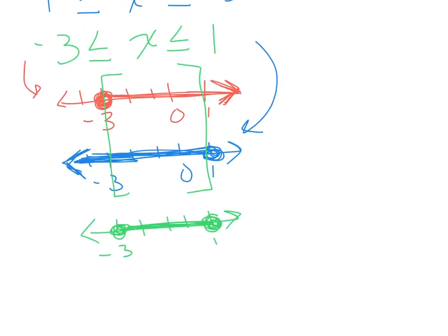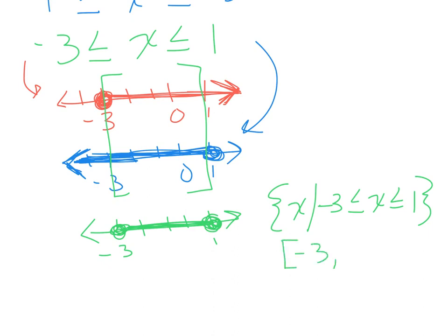The interval notation uses brackets because both endpoints have equal signs, making them closed. Read left to right: negative 3 to 1, both brackets. Negative 3 is the left boundary, 1 is the right boundary, everything between is shaded. So the interval notation is bracket negative 3 comma 1 bracket. That's Example 4.